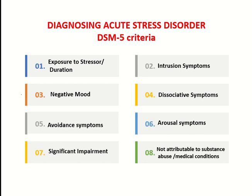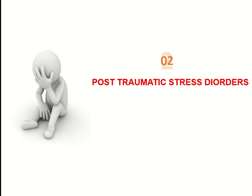Presence of nine or more of any of these symptoms across these categories leads to a diagnosis of acute stress disorder. There also needs to be significant impairment in functioning, and the symptoms should not be attributable to substance abuse, any other medical condition such as mild traumatic brain injury, or explained by a brief psychotic disorder. We are seeing this very commonly now in our OPDs and telepsychiatry consultations following the COVID-19 outbreak in Pakistan, including in patients who already had previous psychiatric disorders.